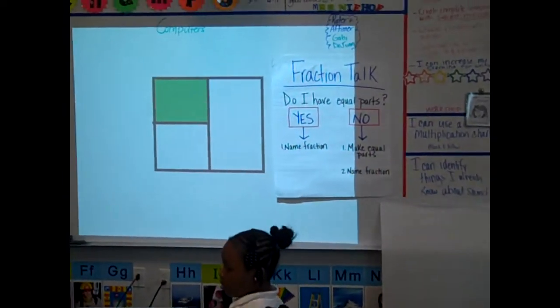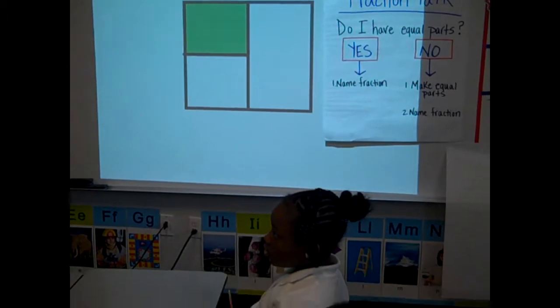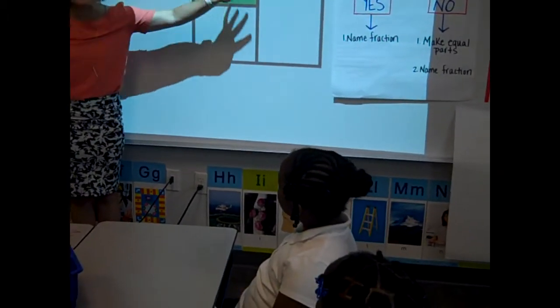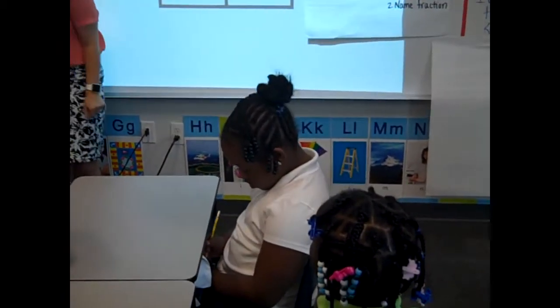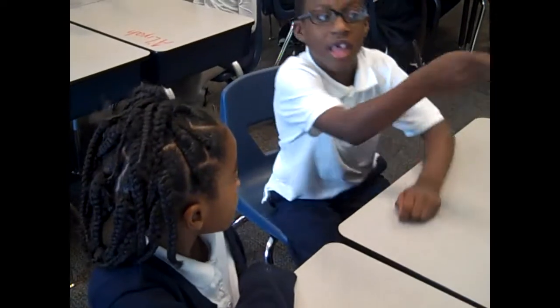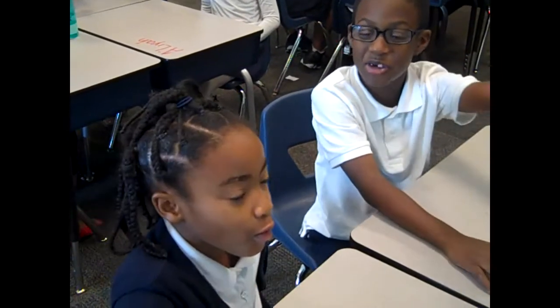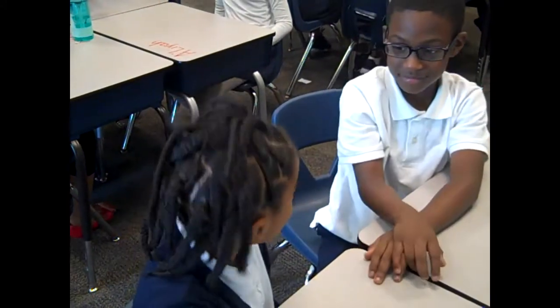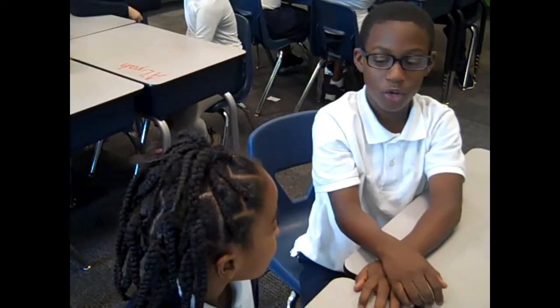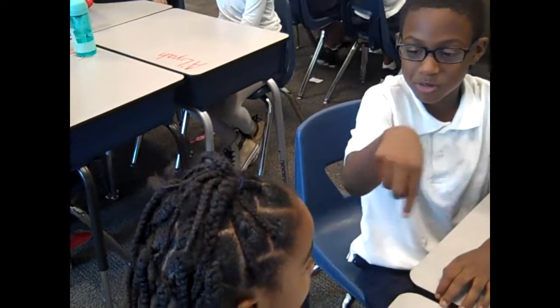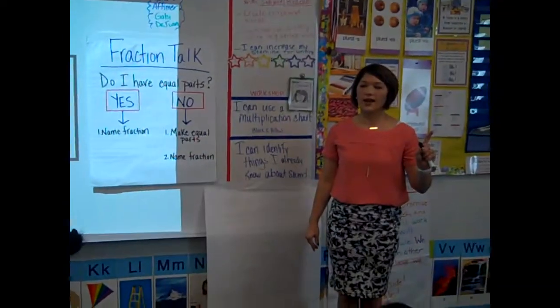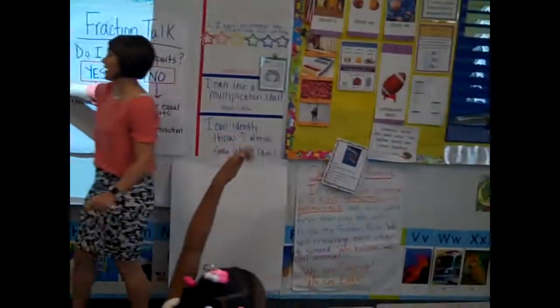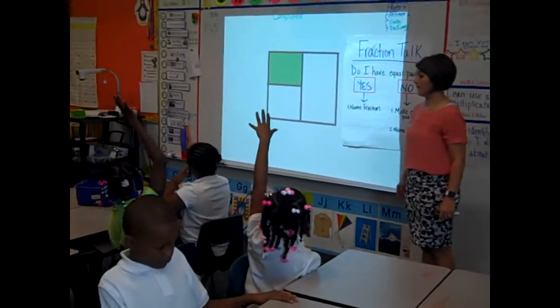Partner B, I want you to turn to partner A and tell them how do you think we might make this into equal pieces or equal parts. Go. How do you think we might make this into equal pieces? We should put it in three lines — you could just do a big one. Raise your hand — who's got an idea? How can I make this into equal parts?